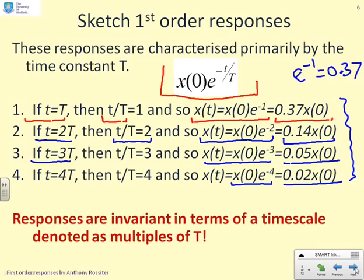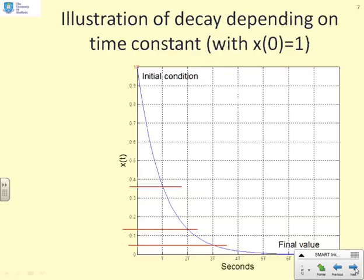Now, what's the key observation here? The responses for a first-order system are invariant if you use a timescale denoted in multiples of capital T. So after T seconds, I've always got 37% of x(0). After 2T seconds, I've got 14% of x(0). 3T seconds, I've got 5% of x(0), and so on. As long as I do the horizontal axis as multiples of capital T, then the graph is always the same.